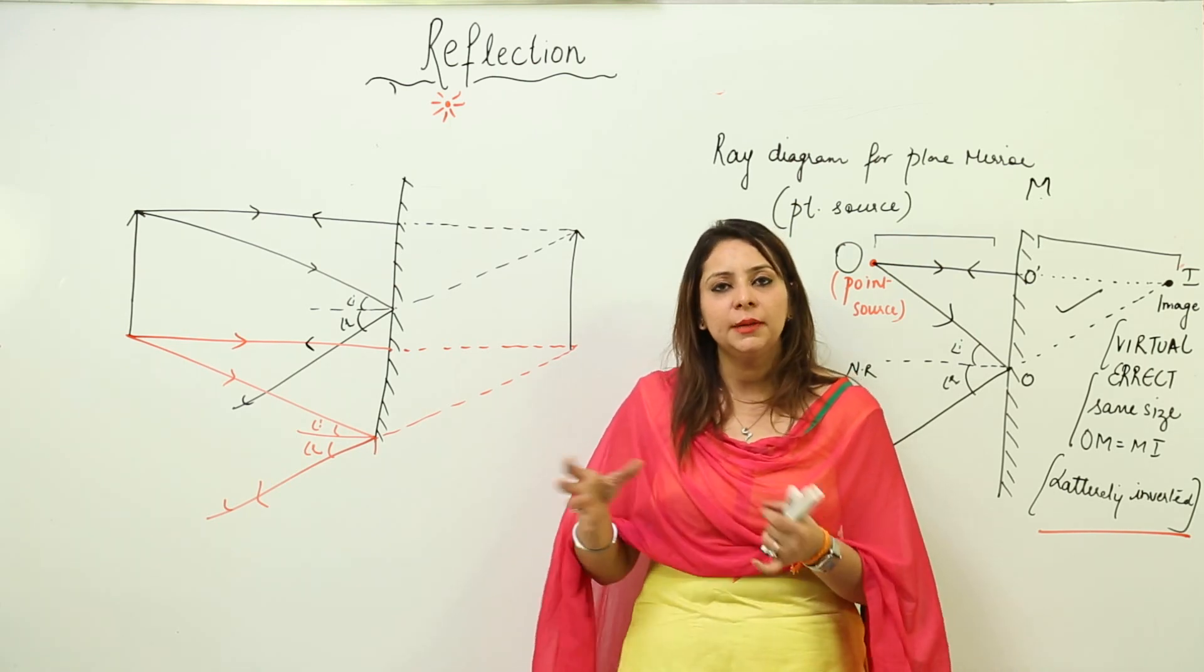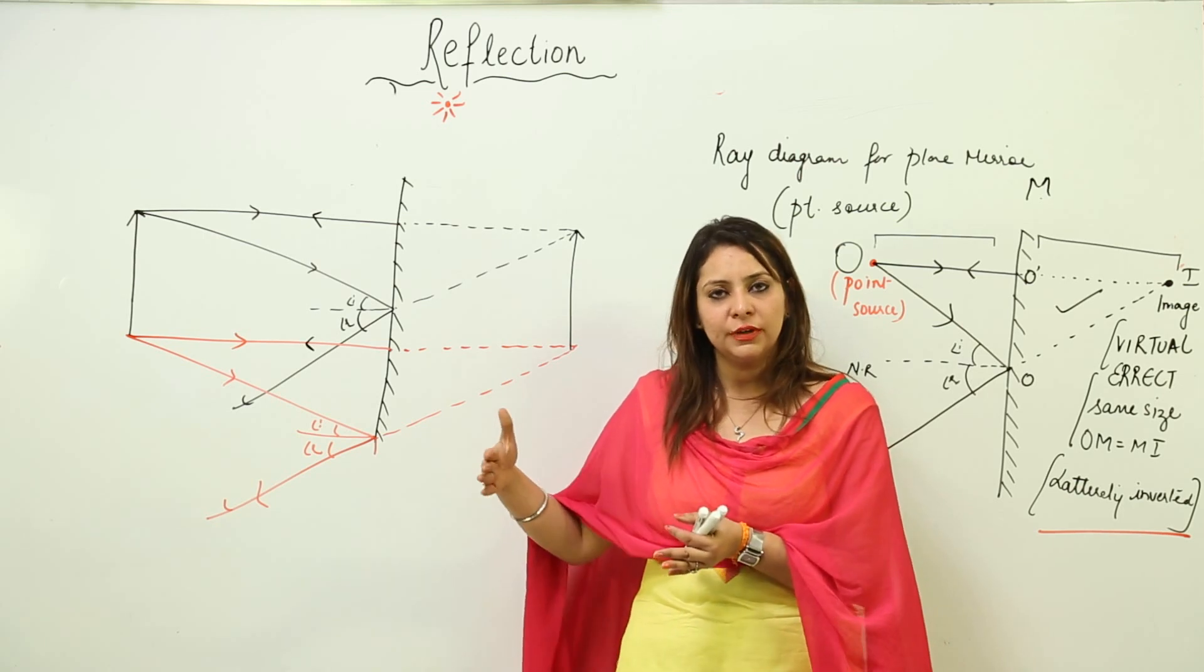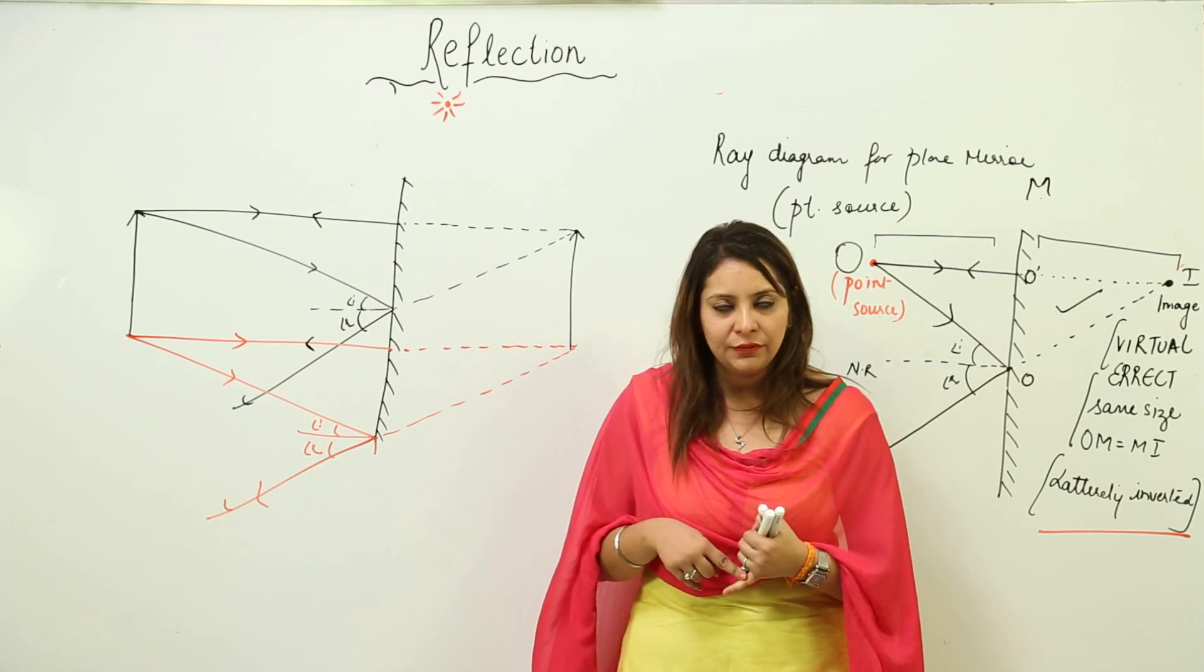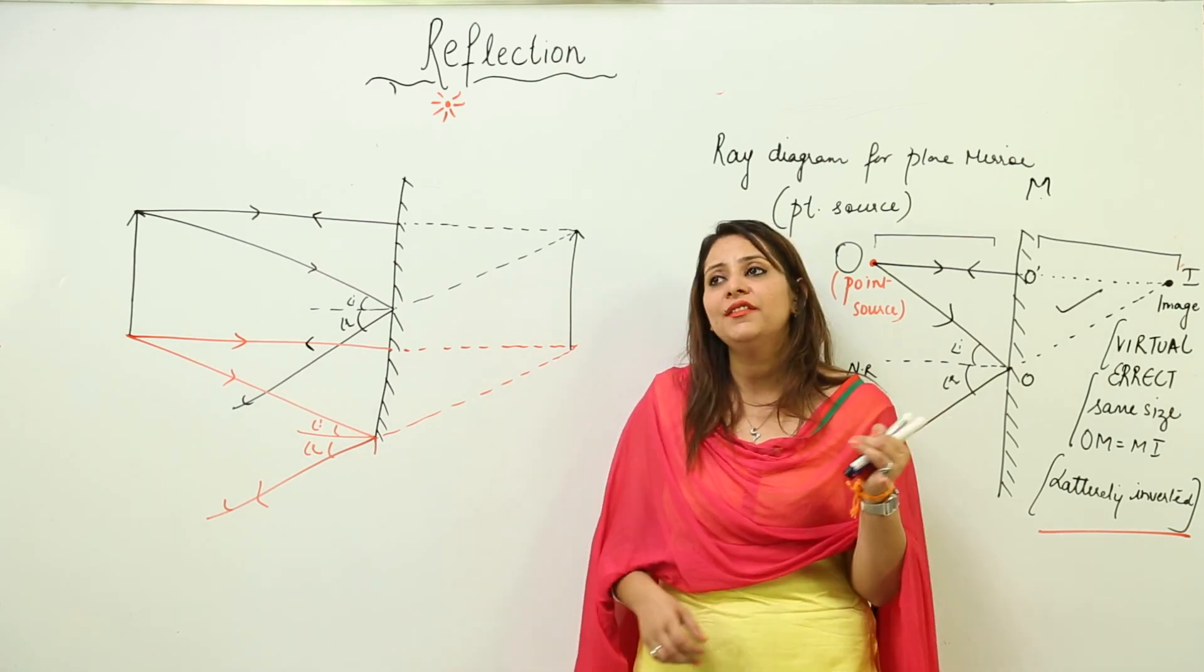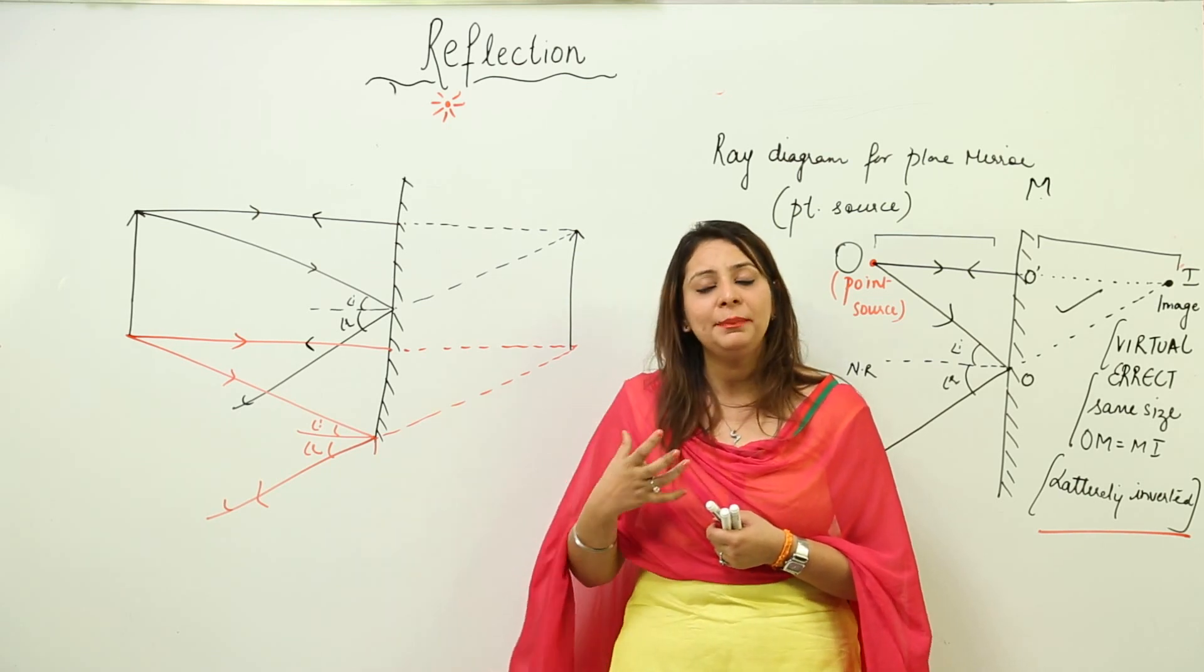It's used in kaleidoscope, periscope, and solar cooker as a reflector. Moreover, whenever we want to get multiple images, we can get them by placing plane mirrors at different angles.